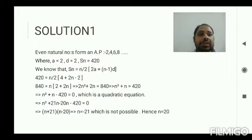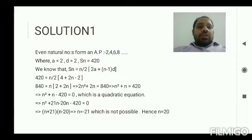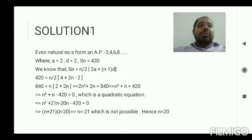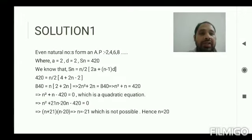Even numbers form an AP: 2, 4, 6, 8, and so on. Here the first term a = 2 and the common difference d = 2. The sum of n terms is given as 420. Using the formula Sn = n/2 × (2a + (n−1)d), we substitute the values and write: 420 = n/2 × (4 + 2n − 2). On simplifying this, we will get a quadratic equation: n² + n − 420 = 0.